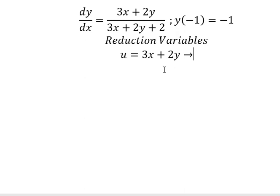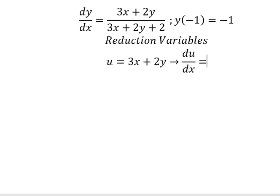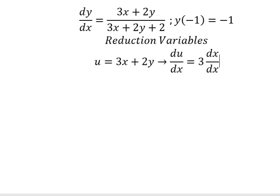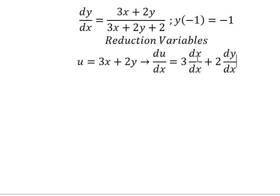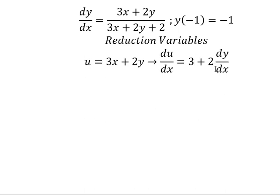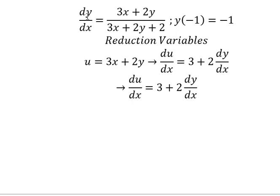We need to do first the differentiation for both sides, and we have like this. We can see that we have number 1, and we can see that we have dy over dx. I will put number 3 go to the left, and then we divide both sides by number 2.